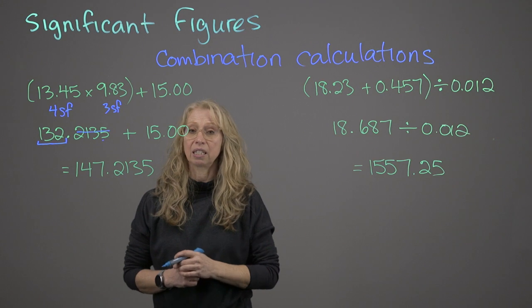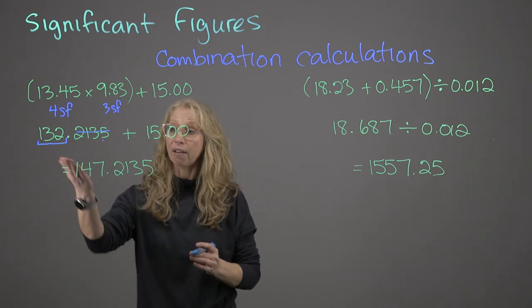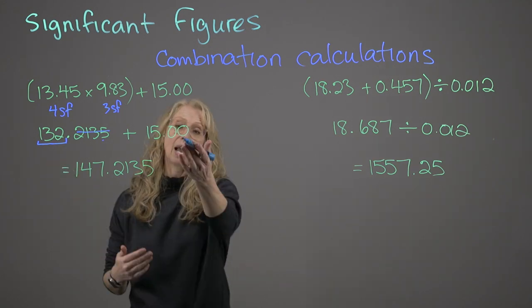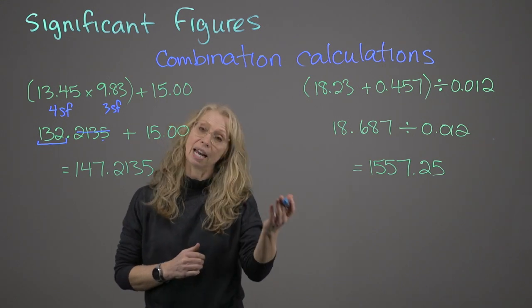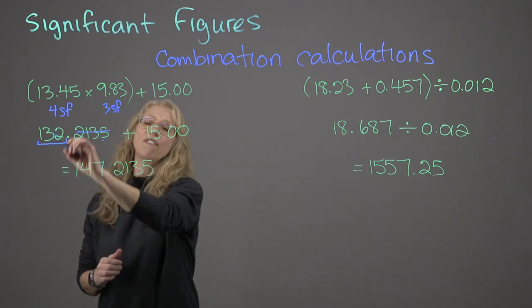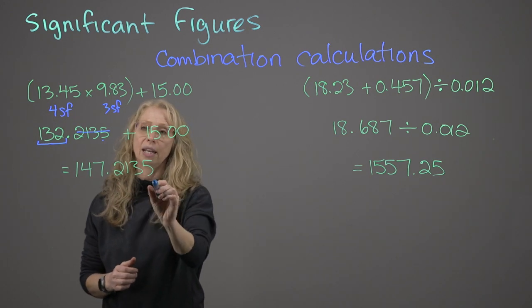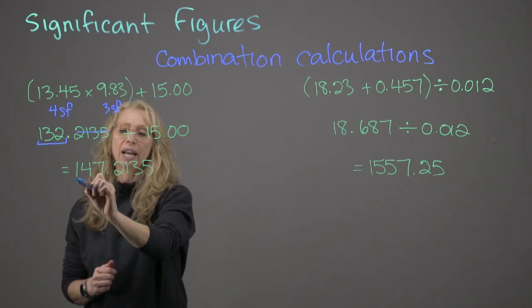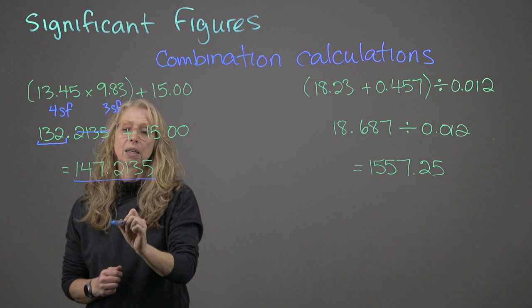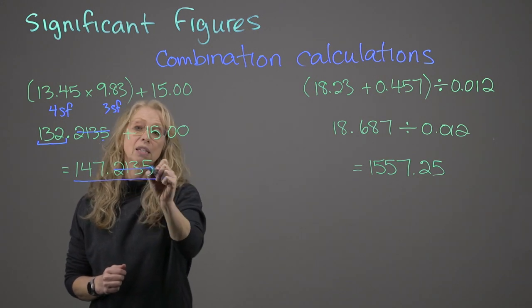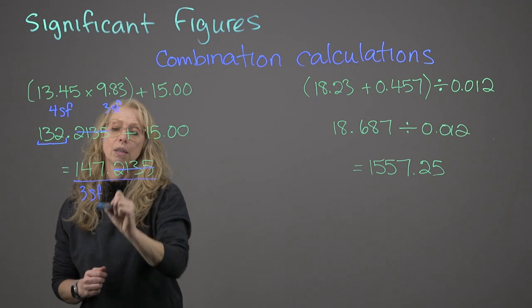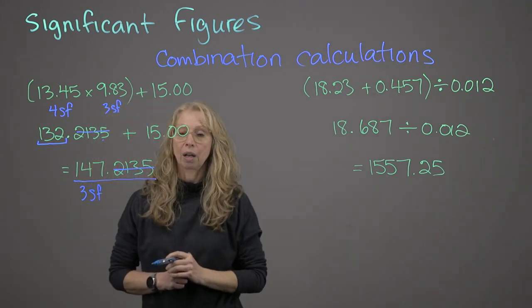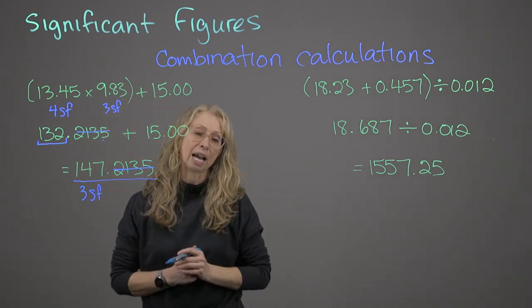Now I add that to 15.00. Addition and subtraction is the least number of decimal places. I have no decimal places, adding a number with two decimal places. So my answer can have no decimal places. So if I did all of this, plugged it into my calculator, my final answer would be this. No decimal places, 3 significant figures is my final answer. 147 is how I would report it.